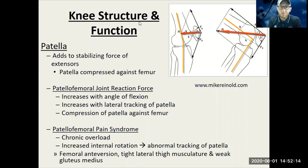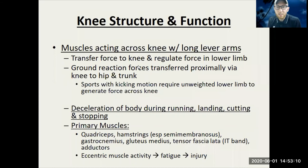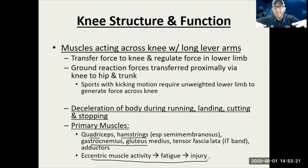Often times you get patellofemoral pain syndrome with chronic overload — just putting excess pressure on the knee again and again. The quadriceps and hamstrings, as well as the hip muscles, need to know how to eccentrically contract and slow your body down during deceleration or landing. If they don't, it's going to put a lot of force through that knee. Landing softly, slowly lowering your body, takes pressure off the knee versus just hitting the ground and not landing softly.